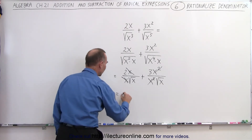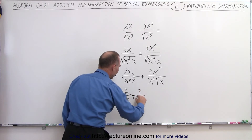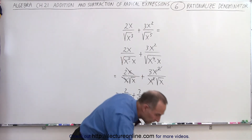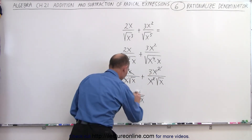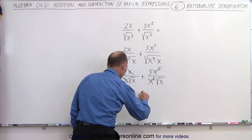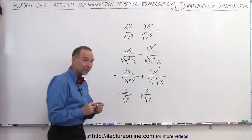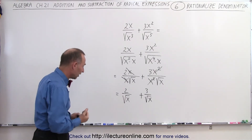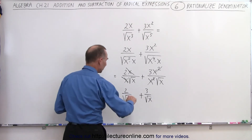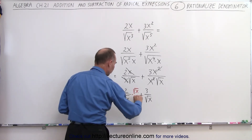That leaves you with 2 divided by the square root of x, plus 3 divided by the square root of x. Now I'm going to rationalize the denominator. In both cases, I'm going to multiply both the numerator and the denominator by the square root of x divided by the square root of x.